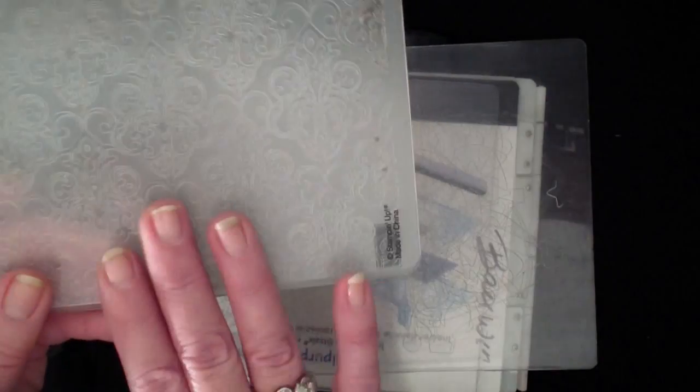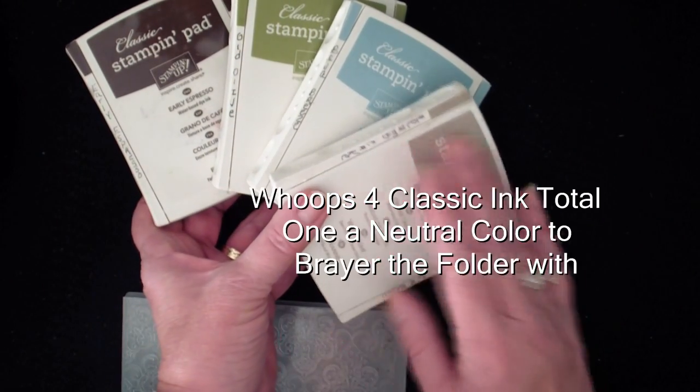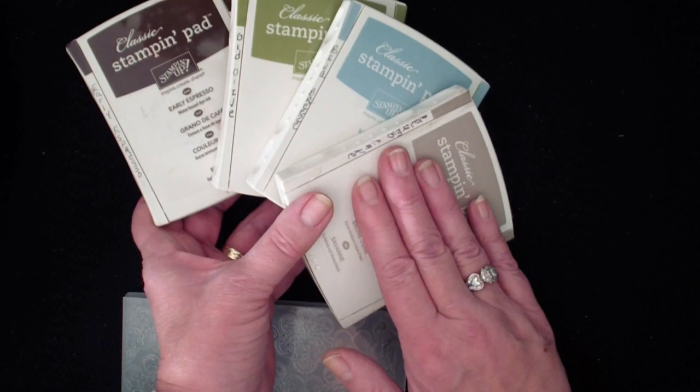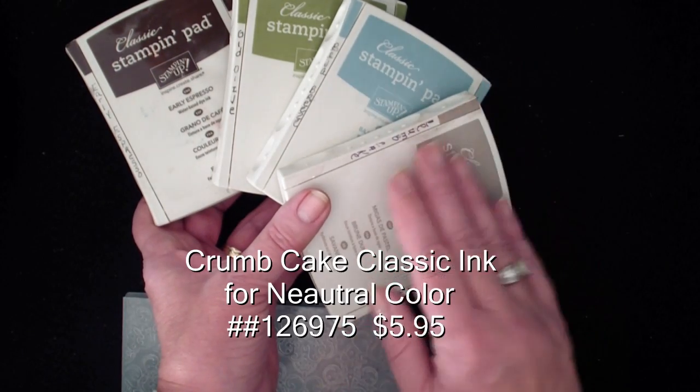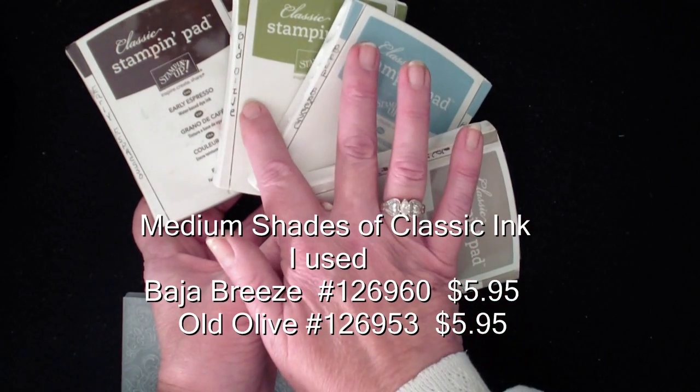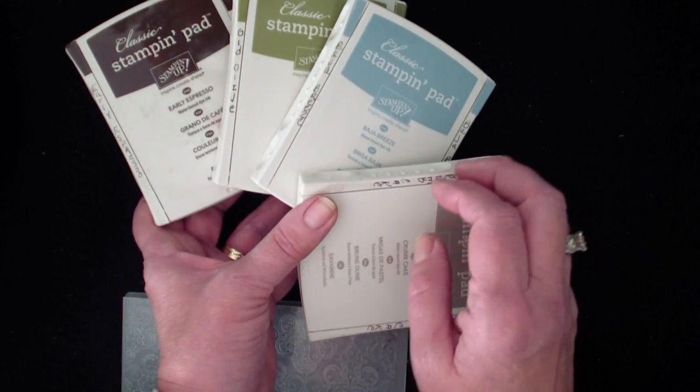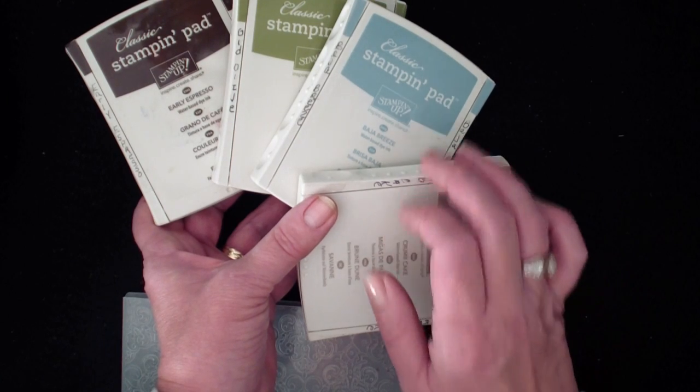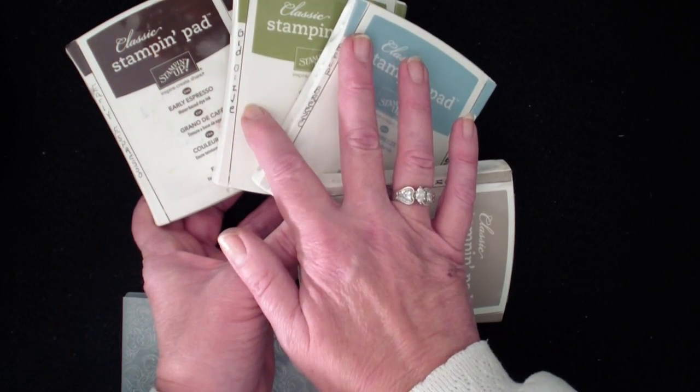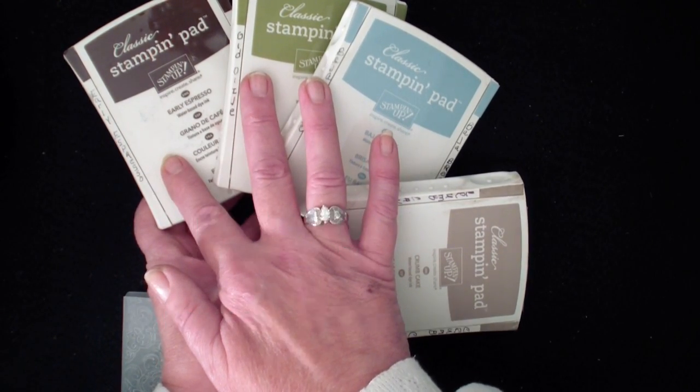In order to achieve this look, we need three different classic inks. First, we need a neutral. I like using the crumb cake. And then if you're going for the faux patina look, the metal look, we need two medium shades of a blue and a green. You want the first, if you're going to use the blue, to be lighter than the green. I am going to be using the crumb cake, the Baja Breeze, and the Old Olive. And then you want a darker color over top. I'm going to be using the Early Espresso for that.